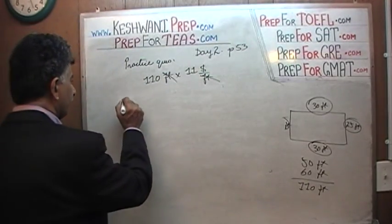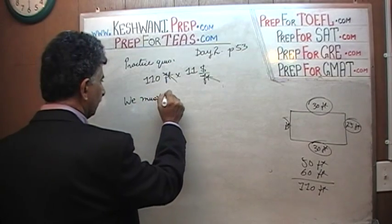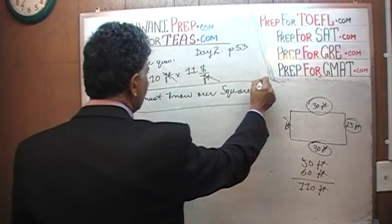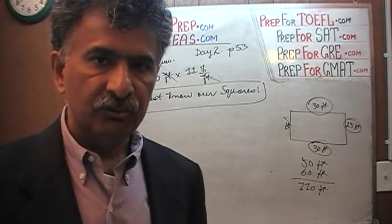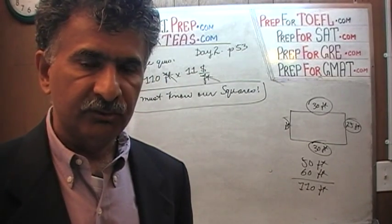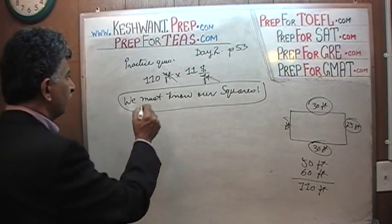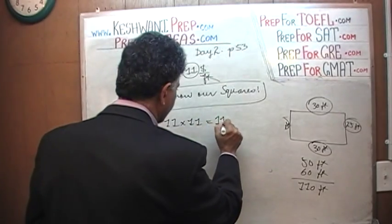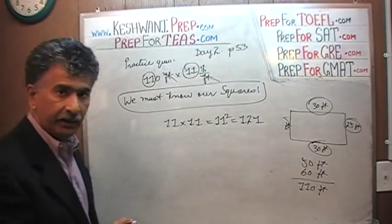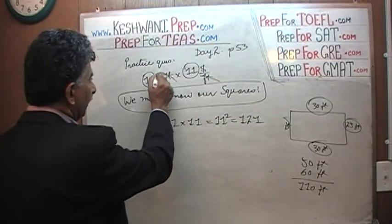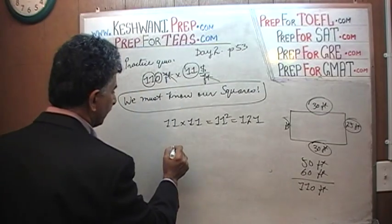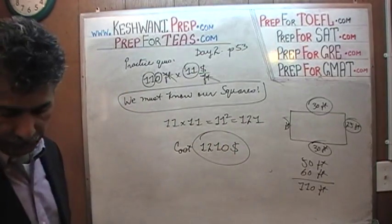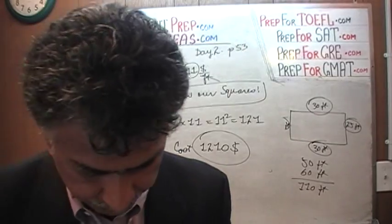One of them is that you must know your squares — we'll cover those tomorrow. Here, we need 11 times 11. If you knew your squares, you'd know that 11 squared is 121. So it's 110 feet times 11 dollars per foot: 11 squared is 121, add a zero — the total cost is 1,210 dollars.